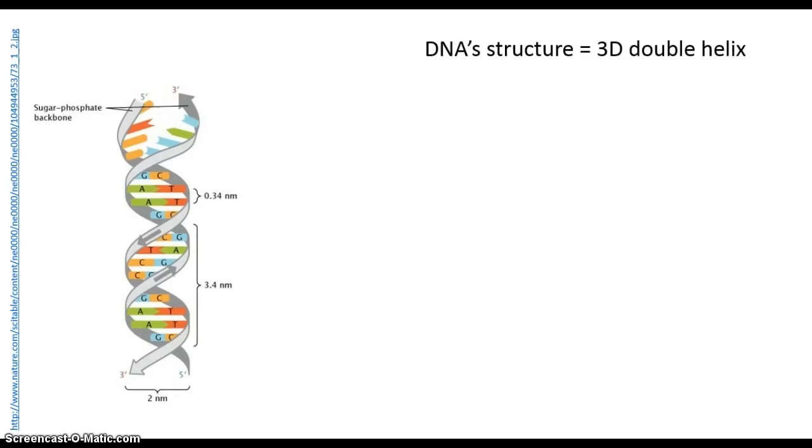In the 150 or so years since Miescher's discovery, we've discovered that the structure of DNA is actually a double helix, like a twisted spiral staircase.